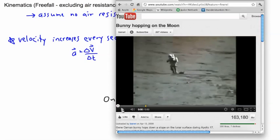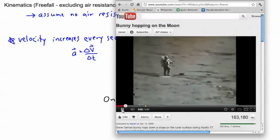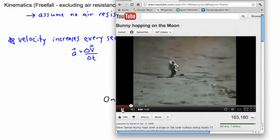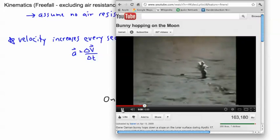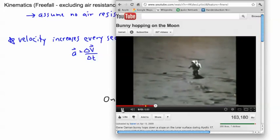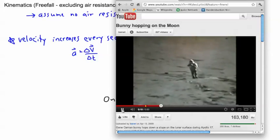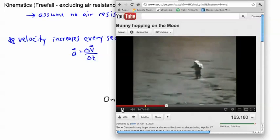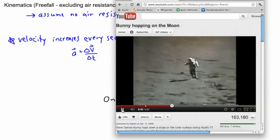This is on Apollo 17, which is the last of the Apollo missions to go to the moon. There's a guy named Gene Cernan, one of the guys who went there. Look how he hops. The acceleration due to gravity on the moon is a lot less than on Earth - about one-sixth.